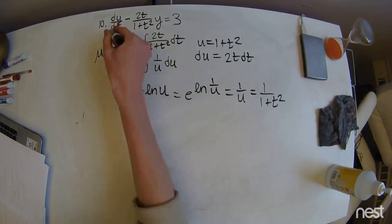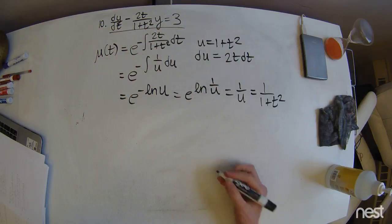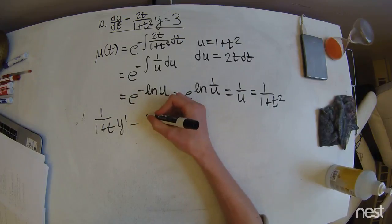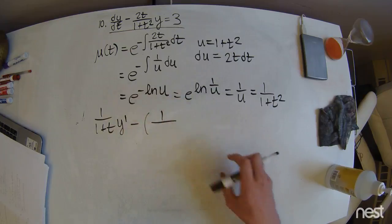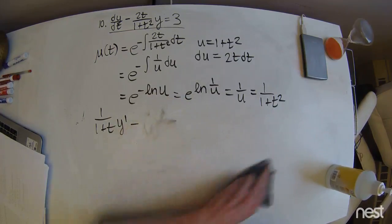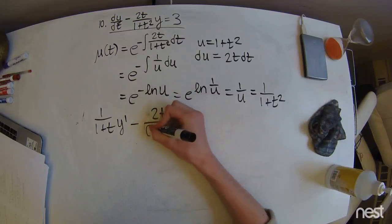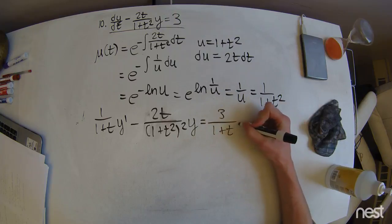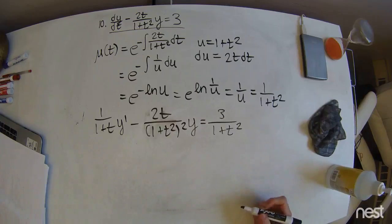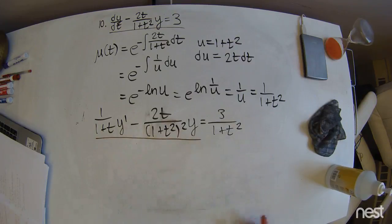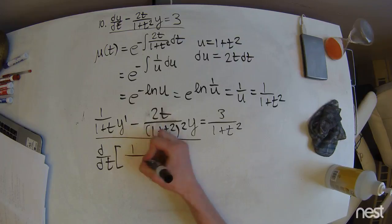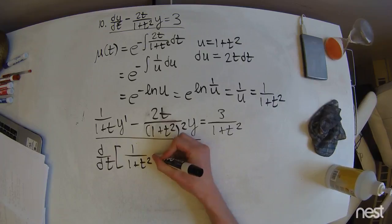So now we're going to go ahead and multiply this original equation across by mu. We're going to use the reverse product rule, because we can see that this portion of the equation is the result of a product rule, and we're going to get that observation written out.